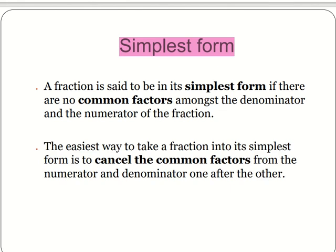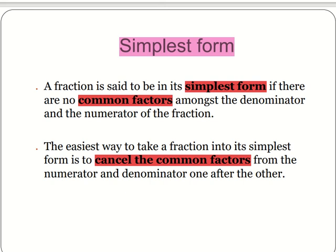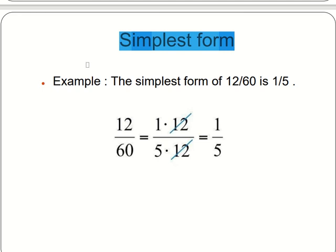Simplest form. A fraction is said to be in its simplest form if there are no common factors among the denominator and the numerator of the fraction. The easiest way to take a fraction into its simplest form is to cancel the common factors from the numerator and denominator one after the other. For example, the simplest form of 12 by 60 is 1 by 5.